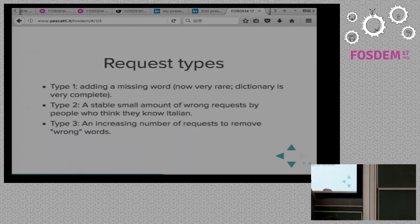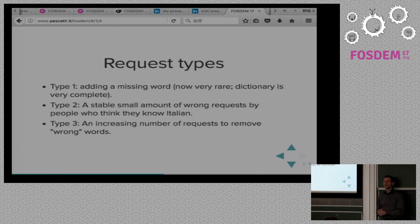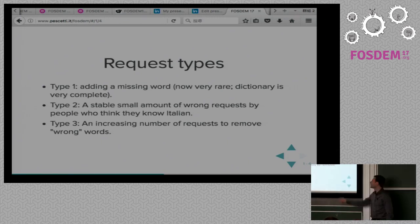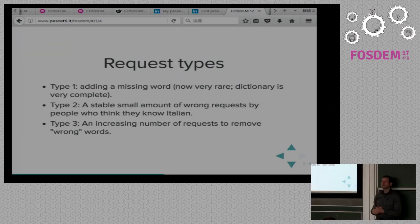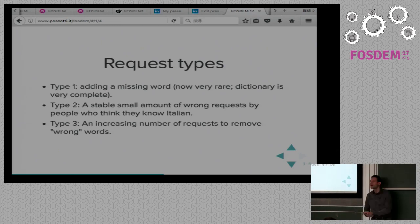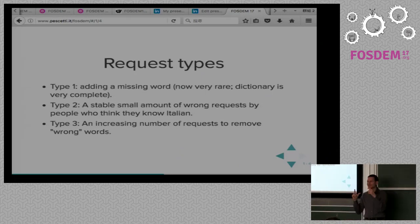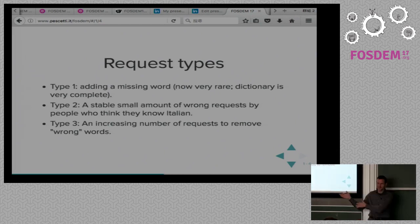The request types we get: type one is very easy — you type a normal word, find out it is underlined red, and send an email asking to add it to the dictionary. This is very rare. Most of the time it is actually a type two request — people do not take the time to check in a real dictionary whether the word should be there, and most of the time it should not. I already have canned answers saying this word does not exist. Type three is the interesting one: I get an increasing number of requests to remove wrong words — people who misspelled a word but it was still recognized as valid.